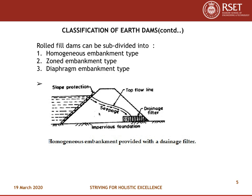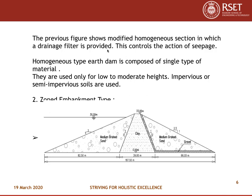The homogeneous embankment type is composed of a single type of material — that is why it is called homogeneous. They are used only for low to moderate heights, and impervious or semi-impervious soils are used. A modified form provides a drainage filter at the toe on the downstream side to control seepage, which distinguishes it from the non-modified version.